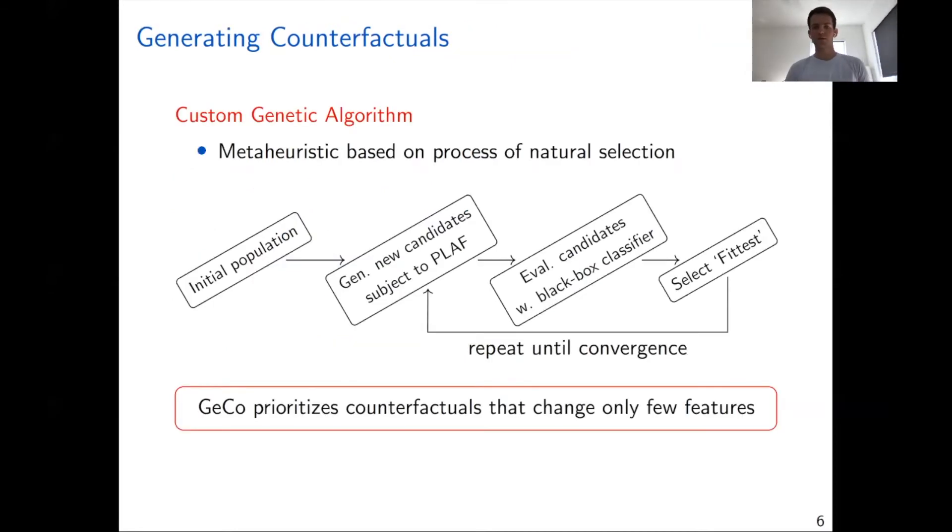To compute the counterfactual explanations, we use a customized genetic algorithm. A genetic algorithm is really a meta-heuristic based on the process of natural selection. In essence, we provide an initial population of candidate counterfactuals. Then based on this current population, we generate new candidates subject to these PLUF constraints that I just introduced. Then we evaluate these candidates with the classifier. In our case, we treat the classifier as a black box, which means that the classifier could really be anything and arbitrarily complex. We have a predefined fitness function to score these candidates, select the fittest, and then repeat this loop until we reach some convergence criteria.